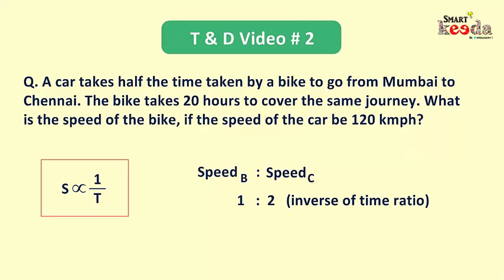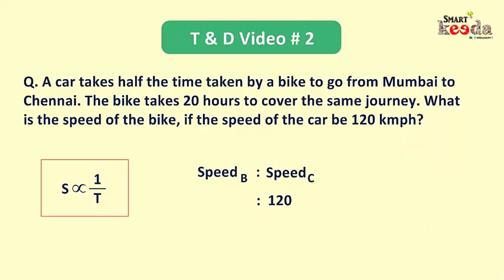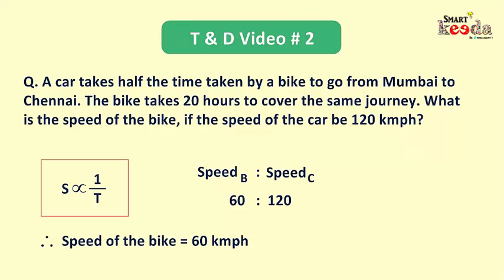With this relationship we can further infer that the speed of the bike will be half of that of the car. The given speed of the car is 120 km per hour, therefore the speed of the bike will be 60 km per hour, which is half of 120, and that's the answer.